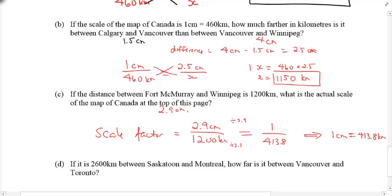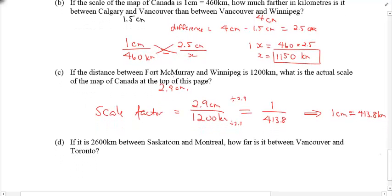Now, part D just says, look, regardless of the scale factor, if I just told you 2,600 kilometers is between Saskatoon and Montreal, then tell me how far is it between Vancouver and Toronto. So, what you need to do now is just do the measurements. What are the measurements between Saskatoon and Montreal? So, I'll measure really quickly right now, and you do the same. I've got 5.5 centimeters.